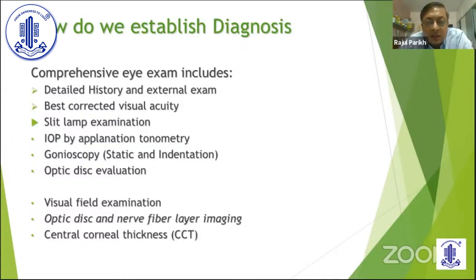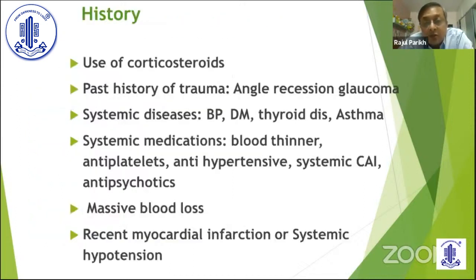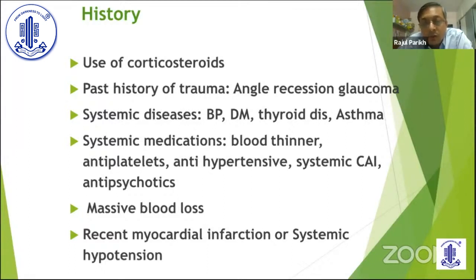Corneal thickness, I would say, is necessary when we are talking about glaucoma in every patient. Regarding history, there are certain important factors. Steroid use is one — steroid is used left, right, and center; over the counter people can buy steroid drops. So steroid use is something we have to keep in mind.